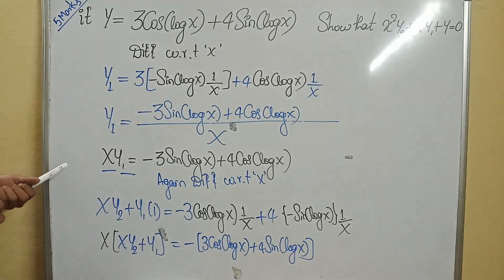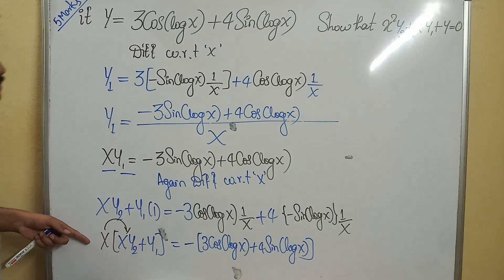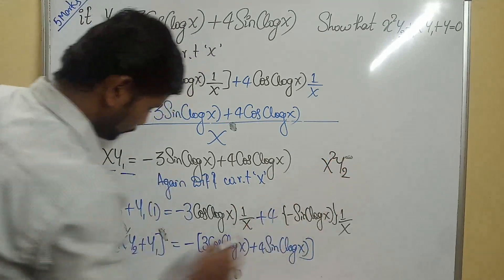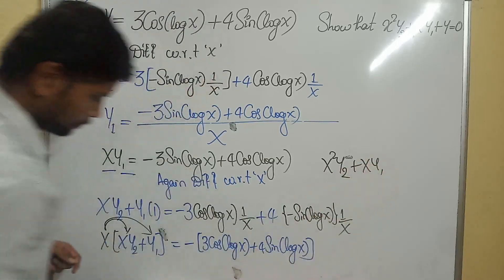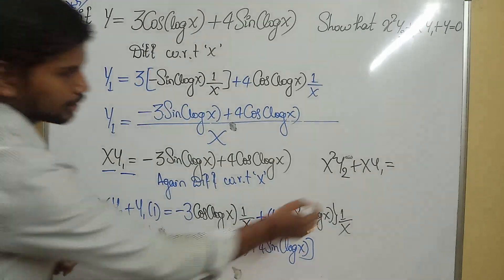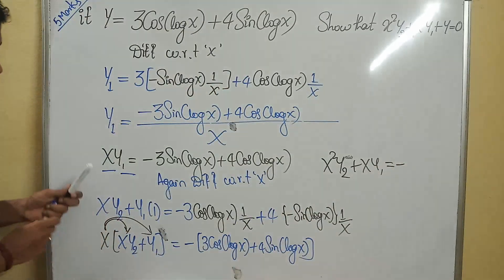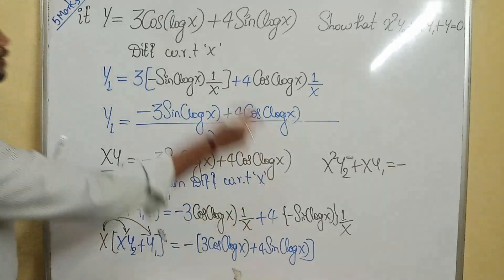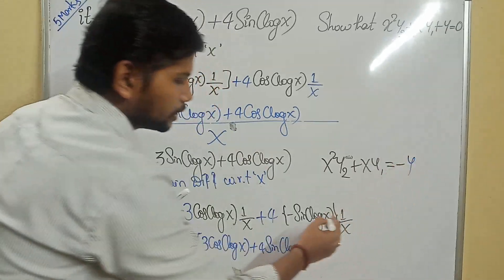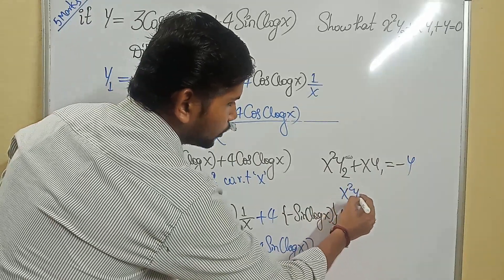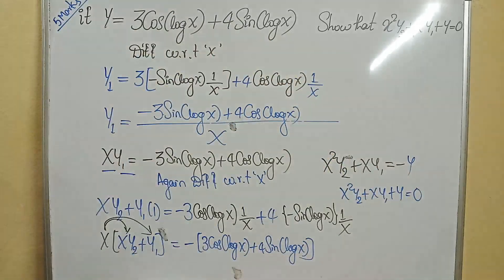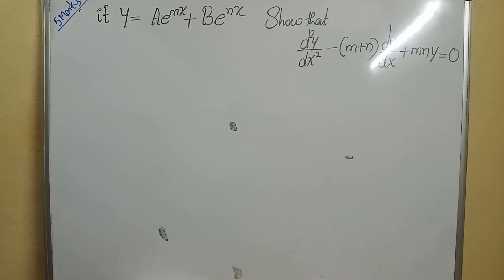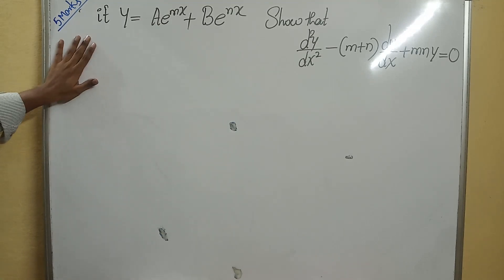Multiplying x into the bracket: x²y₂ + xy₁ = −[3cos(log x) + 4sin(log x)]. Now 3cos(log x) + 4sin(log x) is nothing but y, so the right-hand side is −y. Bringing −y to the left gives x²y₂ + xy₁ + y = 0. We got the required result.